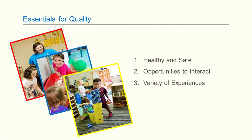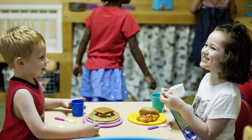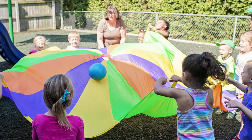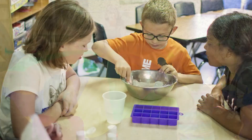All early care settings should include the following essential elements to support and promote quality: 1. Ensure all children are healthy and safe. 2. Ensure all children have the opportunity to interact and build relationships with peers, adults, and the community. 3. Ensure all children have a variety of experiences to engage and use age-appropriate, hands-on materials within the learning environment.